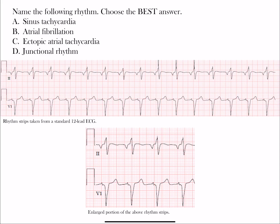Welcome back to our next rhythm challenge. We have two rhythm strips: lead II and lead V1, taken from a standard 12-lead EKG. Below you have the enlarged version of those strips — the smaller boxes help with determining regularity or rate. Lead II is our inferior limb lead and V1 is one of our right precordial leads. Name the following rhythm, choosing the best answer from: A) sinus tachycardia, B) atrial fibrillation, C) ectopic atrial tachycardia, or D) junctional rhythm.